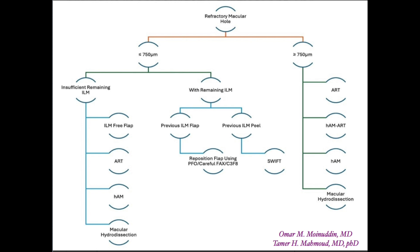In the refractory algorithm, if the macular hole is less than 750 microns, assess whether there is sufficient ILM remaining. If ILM is insufficient, proceed to ILM free flap from a distant area placed on the macular hole, free autologous retinal transplant, human amniotic membrane graft, or macular hydro-dissection. If ILM remains and there was a previous ILM flap, reposition that flap. If the macular hole is greater than 750 microns, proceed as with primary holes: autologous retinal transplant, human amniotic membrane, or macular hydro-dissection.